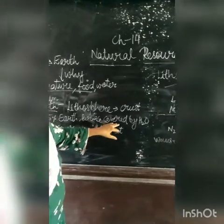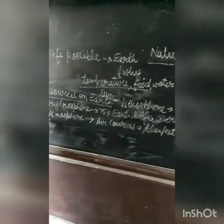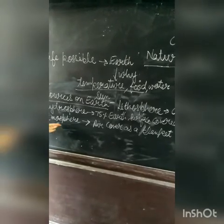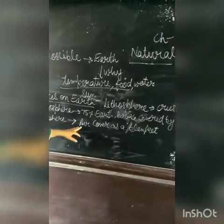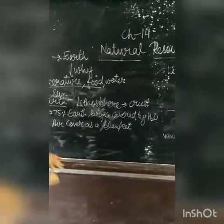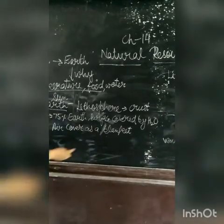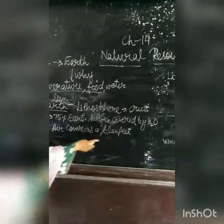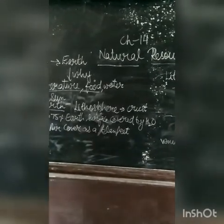Next we come to the hydrosphere. Hydrosphere is the water part. 75% of Earth's surface is covered by water. Next is the atmosphere. Atmosphere means air. Air covers the Earth's surface — it covers the Earth like a blanket. We call it the atmosphere.